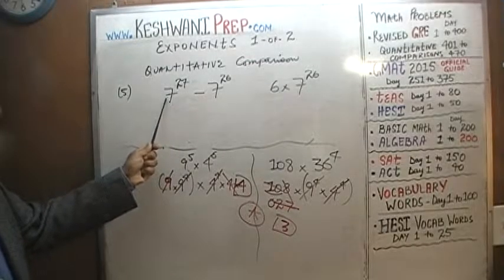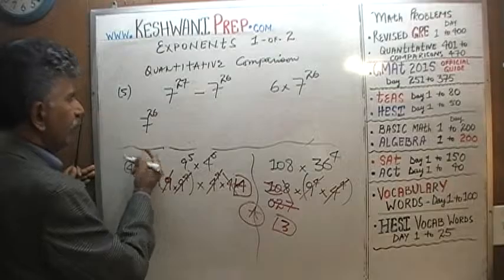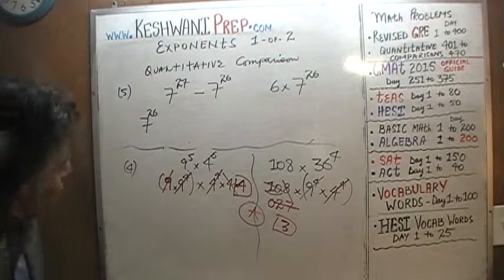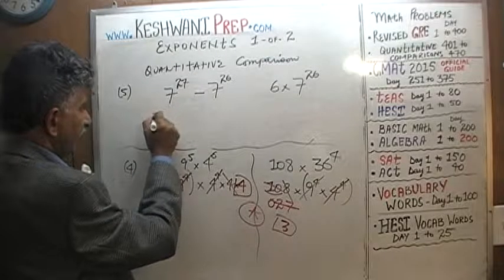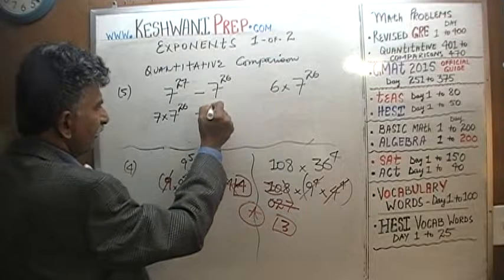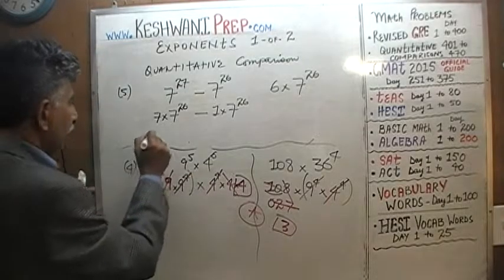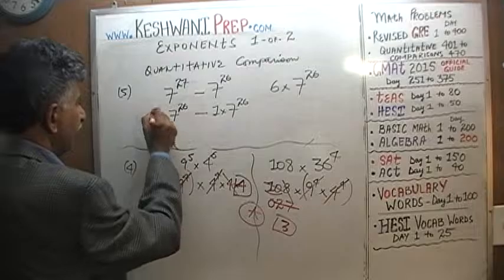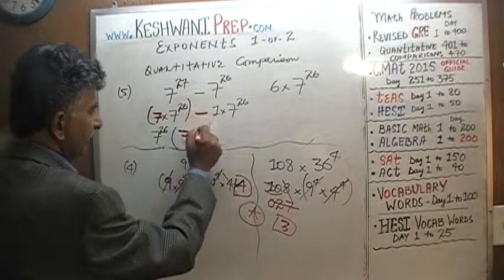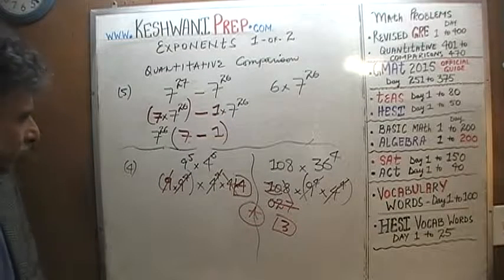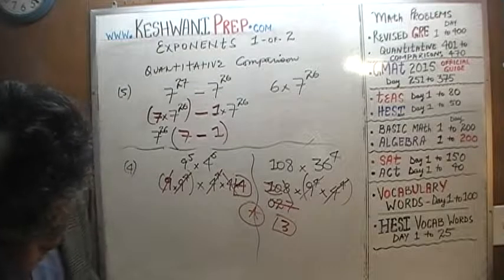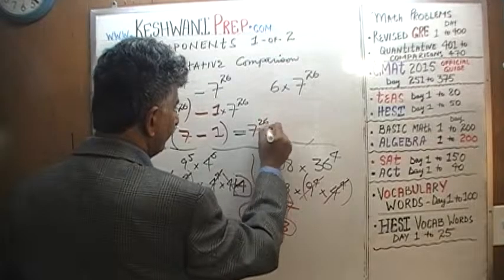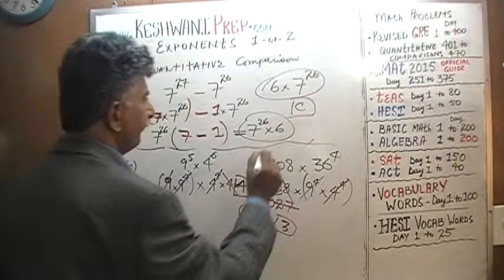We see 7 raised to 26 and 7 raised to 27 — let's take out 7 raised to 26 as a common factor. 7 raised to 27 is the same as 7 times 7 raised to 26, and 7 raised to 26 is 1 times 7 raised to 26. Taking out 7 raised to 26, Column A becomes 7 raised to 26 times (7 minus 1), which equals 7 raised to 26 times 6. That is exactly what Column B is. The answer is C — the two quantities are equal.